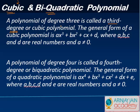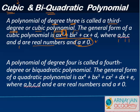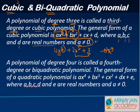A cubic polynomial is a third-degree polynomial, where the degree of the polynomial is three. The general form is ax³ + bx² + cx + d, where a, b, c, and d are real numbers and a ≠ 0. It's important that a ≠ 0 — if a were zero, the highest degree would drop and it would fall into a lower category. For example, if you have 4x³ + 2x² + 3 but set the leading coefficient to zero, it becomes 2x² + 3, which is quadratic, not cubic.